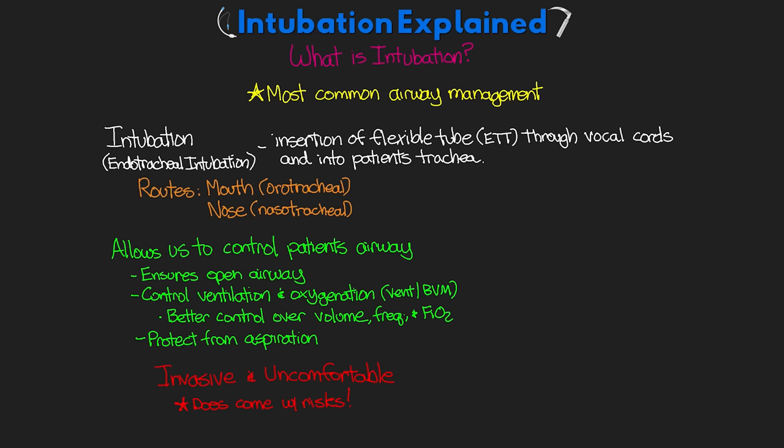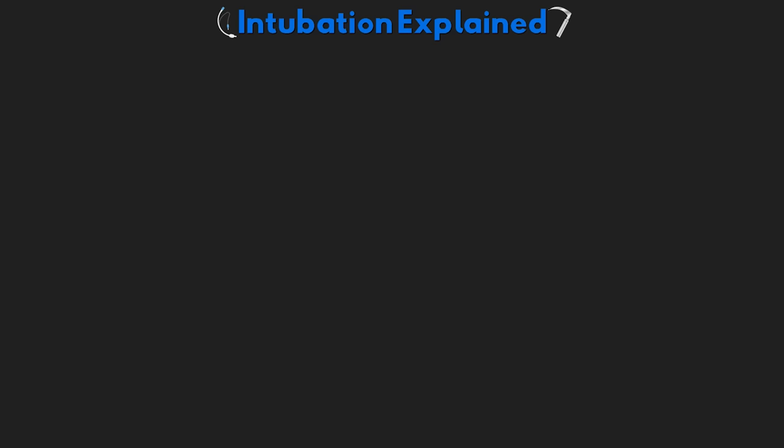So why do we intubate people? Let's talk about some of the indications for that. There are actually a lot of different reasons why we would need to do so, but it really boils down to helping patients protect their airway, ventilating, or oxygenating. The underlying reasons for needing this help could be the result of whatever disease process they have going on, or it could be the result of some medical procedure or surgery that really prevents the patient from doing so, particularly with their airway protection and ventilation. So let's talk about some of the common reasons why we would intubate someone.